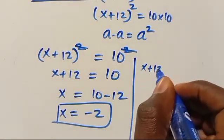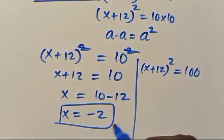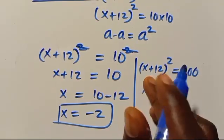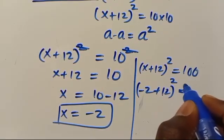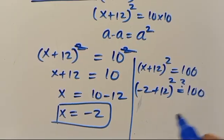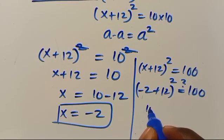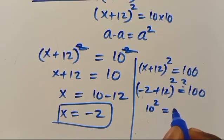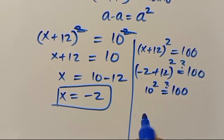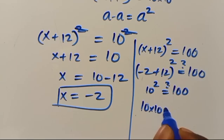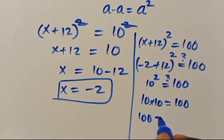To check: we have x plus 12 to the power of 2 equals 100, when x equals minus 2. That gives us minus 2 plus 12 to the power of 2, which gives us 10 to the power of 2, and 10 to the power of 2 simply means 10 times 10 which equals 100. So 100 equals 100, confirmed.